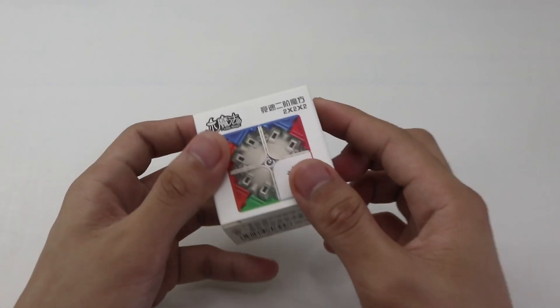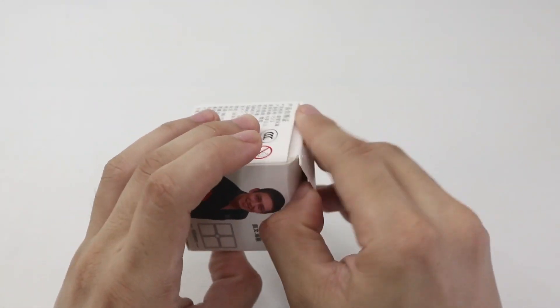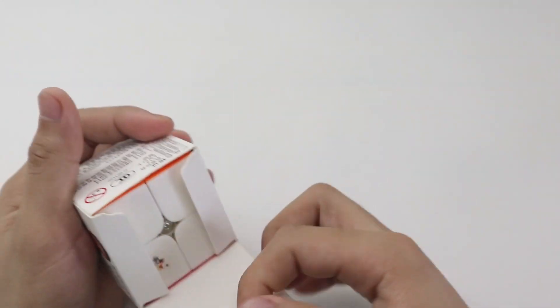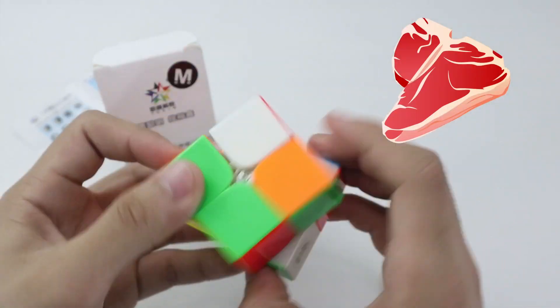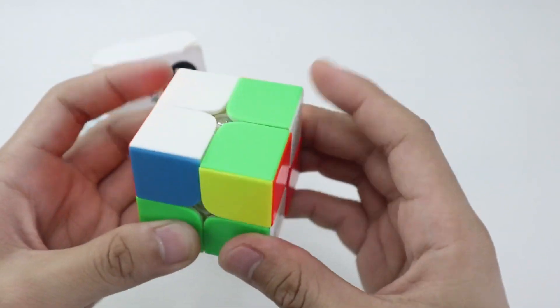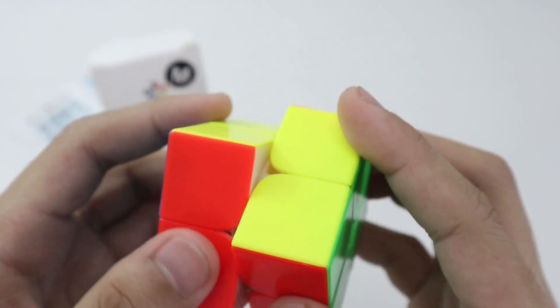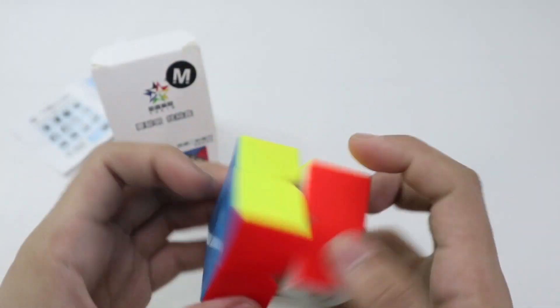Next up, we have this YuXin Little Magic 2x2 M. So yes, it's a magnetic one. But before talking about its stability, the turning feel of this cube is a little bit meatier, heftier compared to Meilong 2x2 a while ago which has an airy feel in it. The magnets are pretty darn light which is good because you don't want to have strong magnets if you already have a heavy turning puzzle.